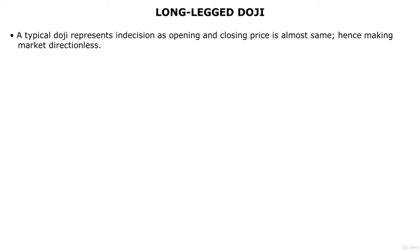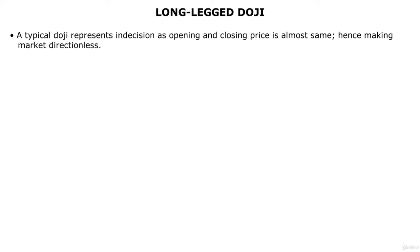Firstly we will study the long-legged doji. When you look at a trading chart you will notice various dojis, which is a candle with no real body. A doji represents indecision among buyers and sellers as price moves nowhere during the session. Both buyers and sellers have control over the price at some point before price closes at its opening price, hence making market direction unclear.